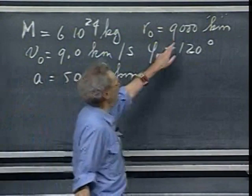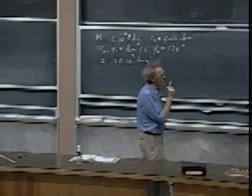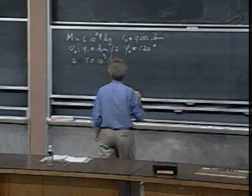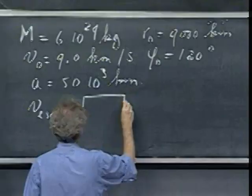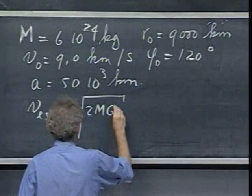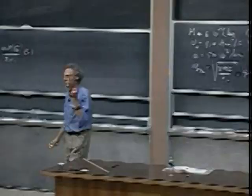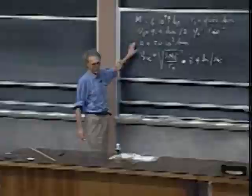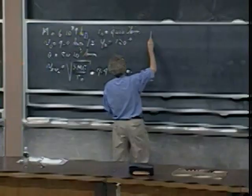Why is the semi-major axis so large? The escape velocity at position D is the square root of 2MG divided by r0, which is 9.4 kilometers per second. Since the object has 9.0 km/s and needs 9.4 km/s to escape, it's very close to escape — so the semi-major axis is enormous. No surprise. Using equation six, the period is about 31 hours for this object to orbit the Earth.